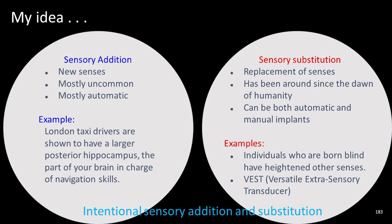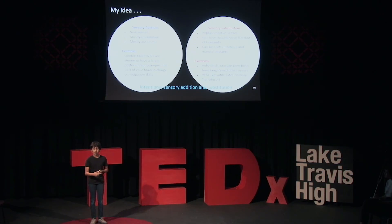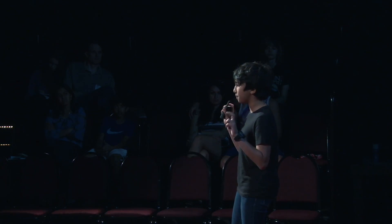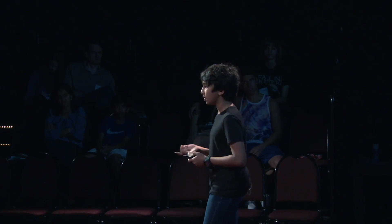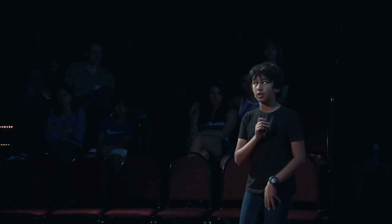Now the VEST — a Versatile Extrasensory Transducer. It's basically a vest that deaf individuals wear so that an array of motors arranged on their back can help them feel speech. And as crazy as this might sound, it works. And this is another example of neuroplasticity.